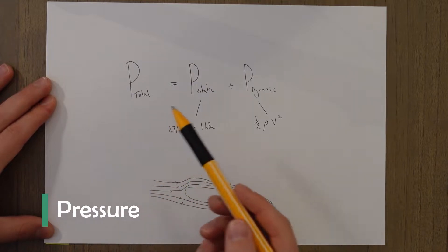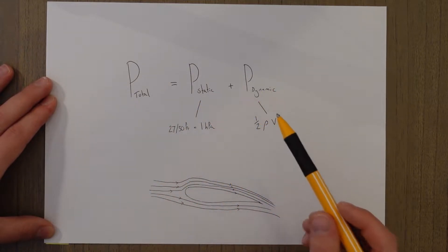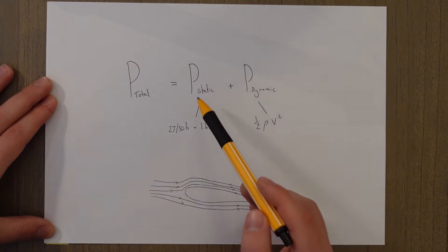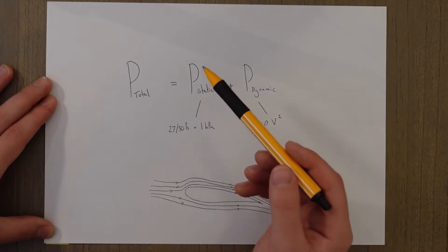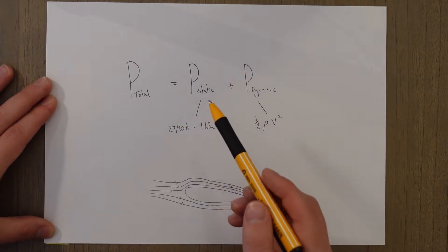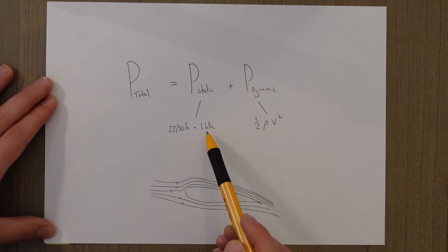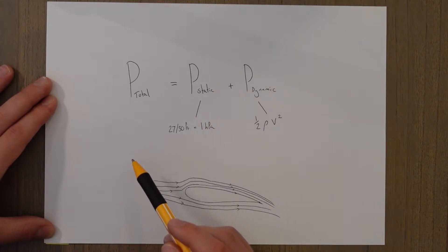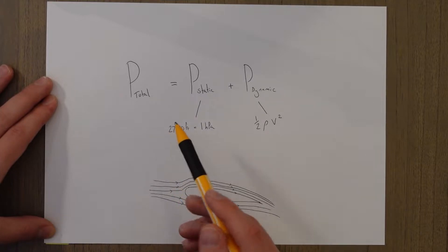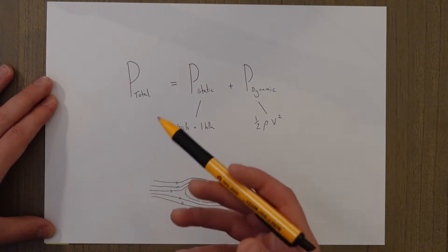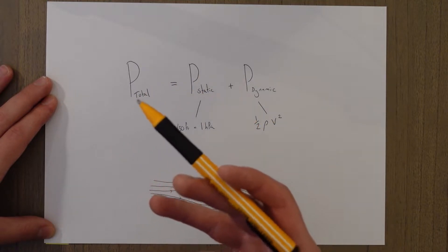Total pressure is equal to the static pressure in the air plus any dynamic pressure that is caused by air moving over an object. The static pressure is greater at lower levels and reduces as we increase in altitude, and in the International Standard Atmosphere this drop in pressure happens at a rate of one hectopascal every 27 or 30 feet — 27 if you want to be exact, 30 feet if you want to be a bit more rough with it. In the real atmosphere this relationship is not as linear, but the pressure lapse rate in ISA conditions is a good estimation.